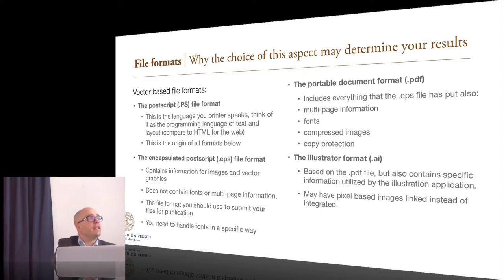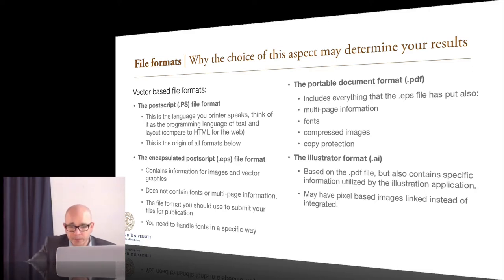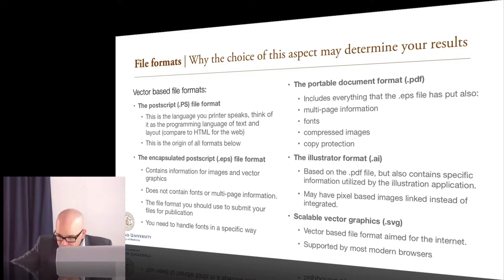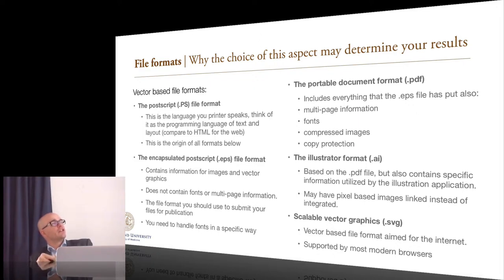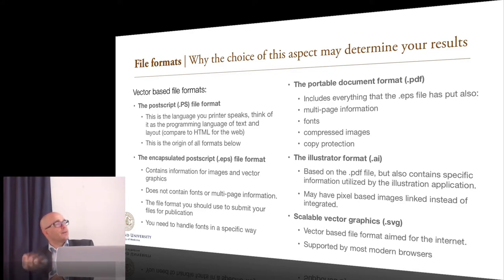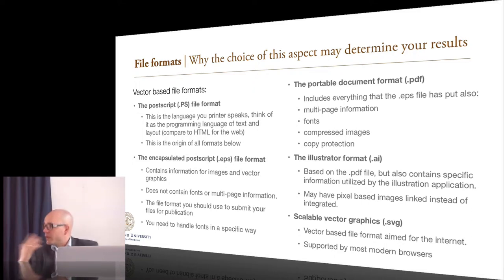The Illustrator proprietary format is very similar to PDF but adds specific information that helps Illustrator work with and modify the document over time. It also gives you the ability to not include pixel-based images in the file but just reference them — linked to another place on your computer. That's very useful when working with large images. The limitation compared to PDF is that the Illustrator file is only a single page. There's also Scalable Vector Graphics (SVG) for publishing illustrations on the internet — very small files that retain vector quality.